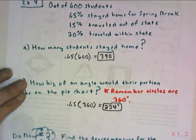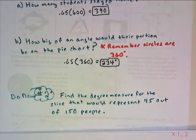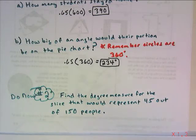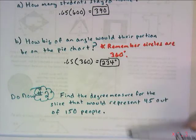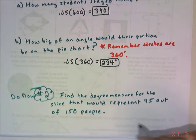So the last thing that you're going to do today, and this is what you're going to bring in with you, and we're going to check it when you come in, is do now number two, when I'm essentially asking you the same question I did here. How many degrees would you need to make for the slice that represents 45 out of 150 people? So if you're going to put this on a pie chart, how big of an arc would you create so that you have a slice that is 45 out of 150?